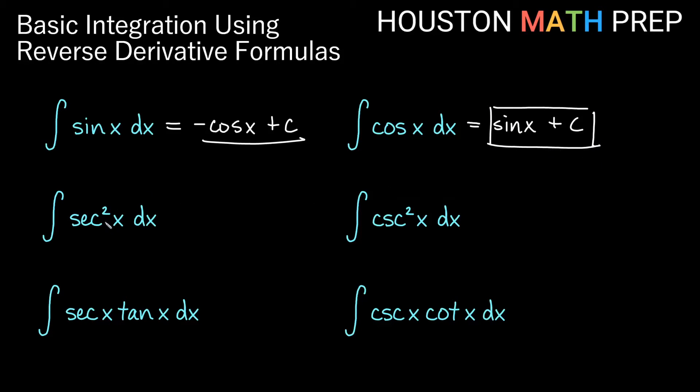We may also remember a function whose derivative is secant squared x. The antiderivative of secant squared x would be tangent of x plus c because the derivative of tangent x is secant squared x. Similarly, we should know a derivative that gives us something that looks like cosecant squared x. Now the derivative of cotangent x is actually negative cosecant squared x. So the antiderivative of cosecant squared x is actually negative cotangent x. We're off by a sign there.